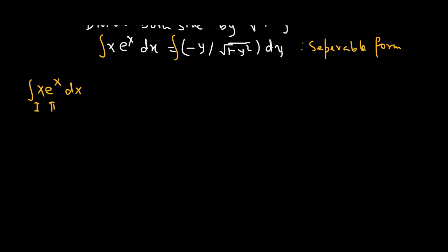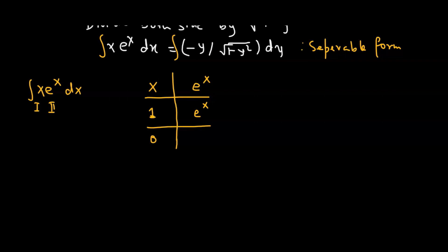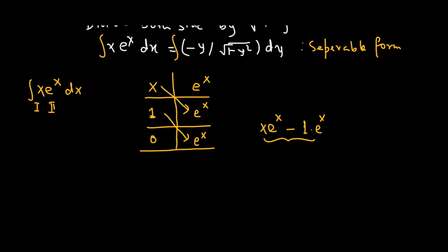We treat x as the first function and e raised to the power of x as the second function, and we are going to use the tabular method. We write x and e raised to the power of x in the same row. Then we differentiate the first function to get 1, and integrate the second function, which gives the same function since it is exponential. Again, differentiating the second row, the first column item 1 becomes 0, and integrating e raised to the power of x again gives the same function. Since we have obtained a 0, we stop. We do a cross multiplication: the integration of x e raised to the power of x equals x times e raised to the power of x minus 1 times e raised to the power of x.